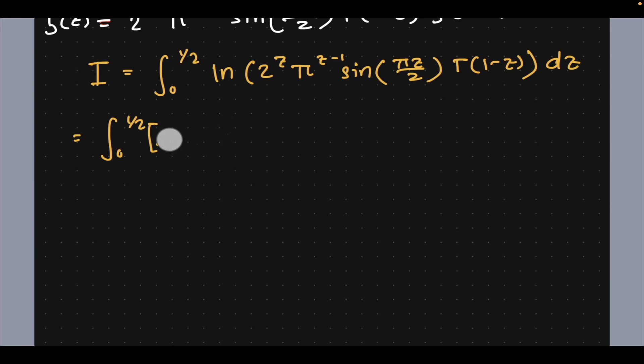We can write this a little better over there. Natural log of 2^z plus natural log of π times (z-1) to the (z-1) plus natural log of sine(πz/2).